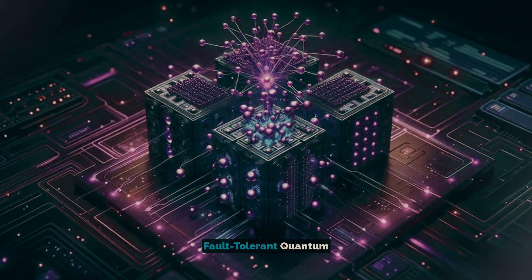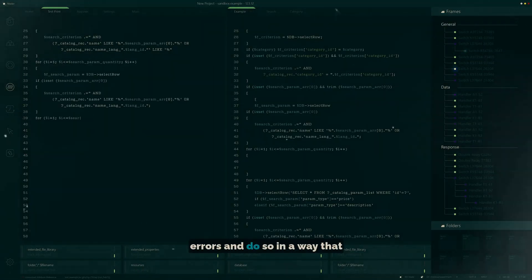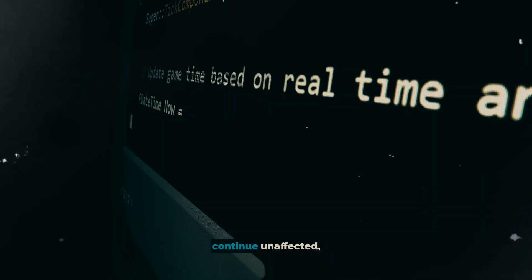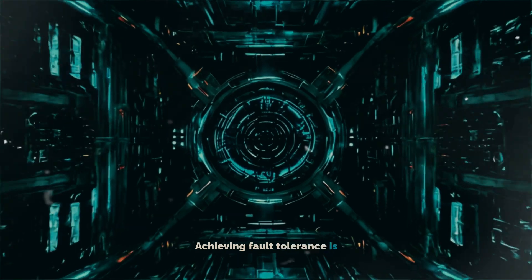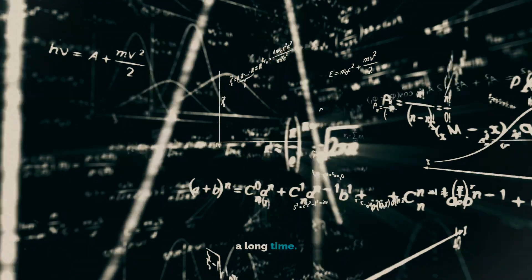Fault-tolerant quantum computing. The ultimate goal is to develop fault-tolerant quantum computers. These systems would correct errors and do so in a way that allows the computation to continue unaffected, even when errors occur. Achieving fault tolerance is critical for practical quantum computing, especially for complex calculations requiring a long time.